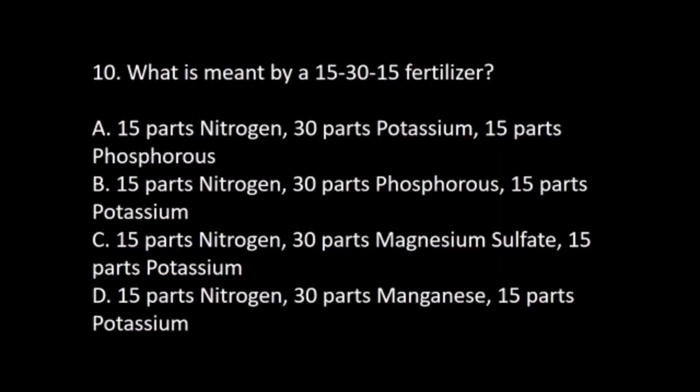Number 10. What is meant by a 15-30-15 fertilizer? A. 15 parts nitrogen, 30 parts potassium, 15 parts phosphorus. B. 15 parts nitrogen, 30 parts phosphorus, 15 parts potassium. C. 15 parts nitrogen, 30 parts magnesium sulfate, 15 parts potassium. D. 15 parts nitrogen, 30 parts manganese, 15 parts potassium. The answer is B. 15 parts nitrogen, 30 parts phosphorus, 15 parts potassium.